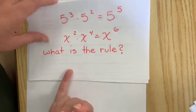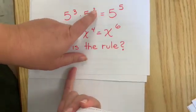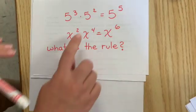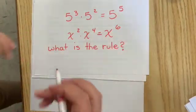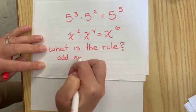So the rule is that I'm adding the exponents because three plus two is five and two plus four is six. So the rule is that we add exponents.